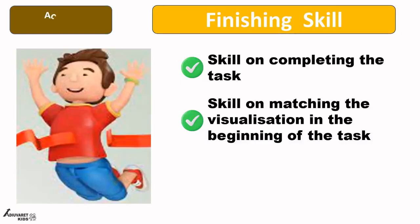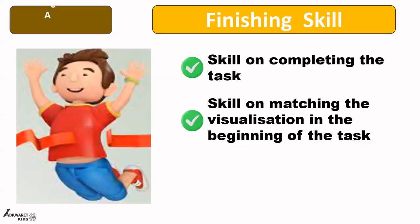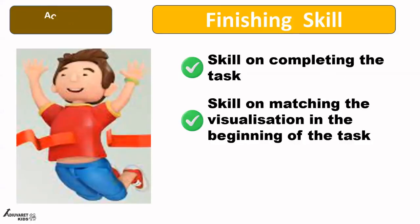The second sub-skill under finishing skill is the skill of matching the visualization. Task completion is first and foremost, but the second thing is: when the child visualizes something at the beginning of the task — as we discussed in the planning stage — at the finishing stage, how far does that visualization match the actual outcome? If the visualization and the reality match almost the same, the child's performance and effectiveness is fantastic. If they differ, there is something problematic, because when visualization is not matching with reality, there is a sense of not fulfilling what you tried to achieve.